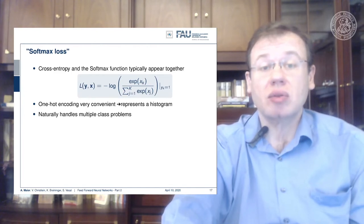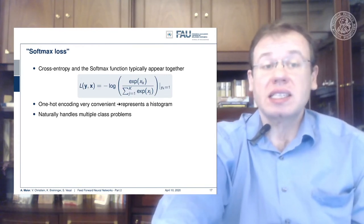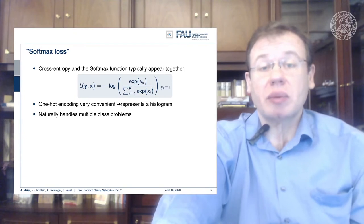This is something very typically used in training networks. So this softmax loss is very commonly used, very useful for one-hot encoding.